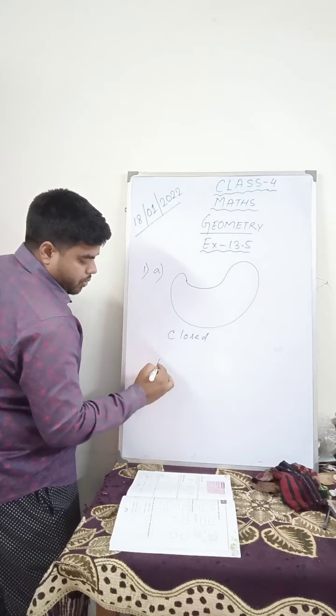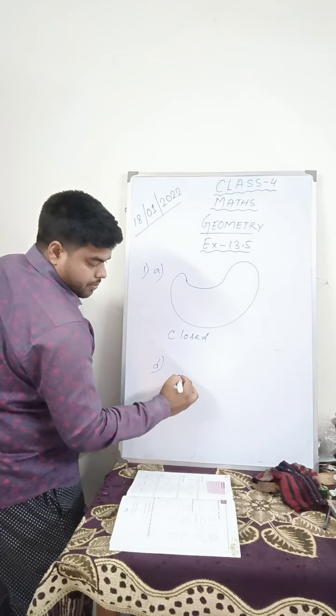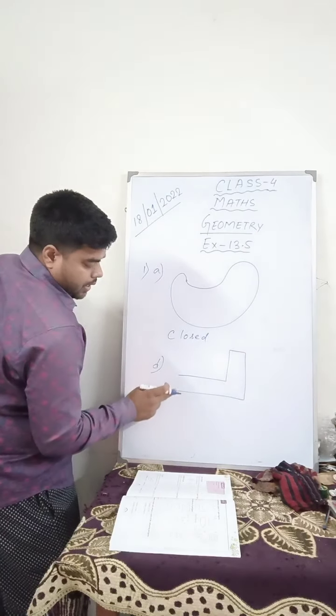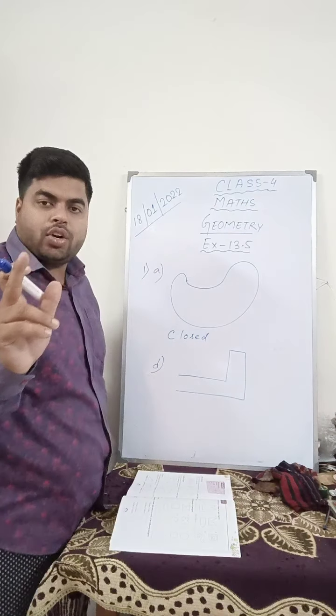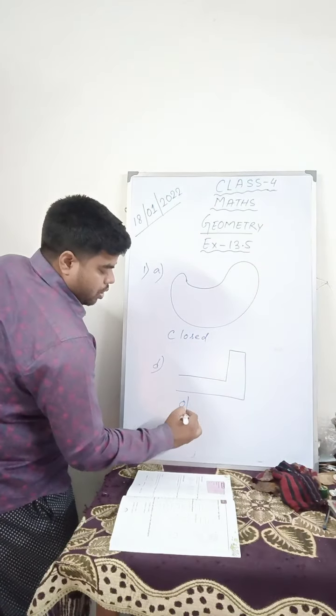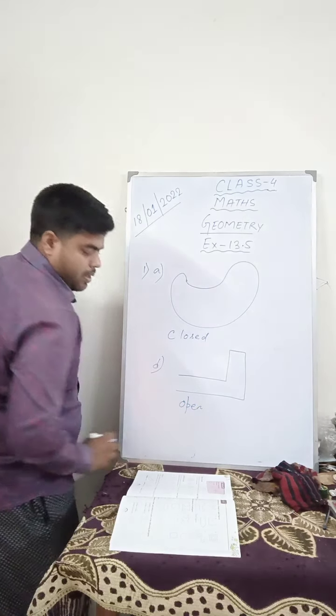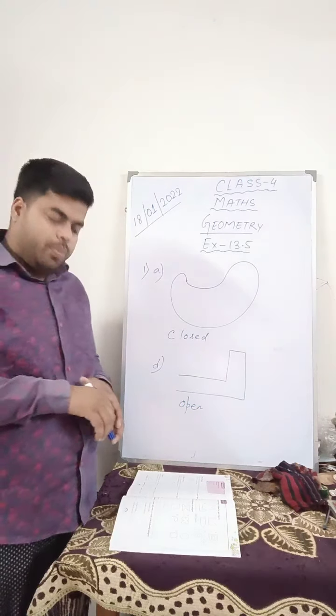Now suppose if you take D, you see the starting and the ending point does not meet at a common point. So it is an open figure. I hope you have understood this, children.